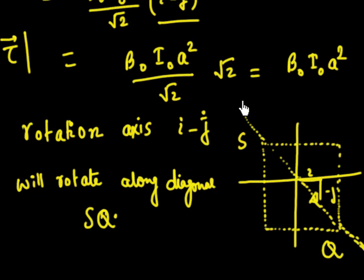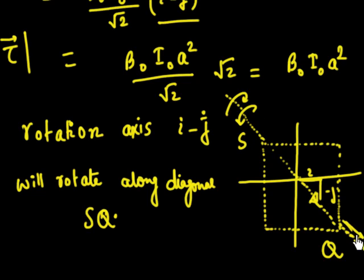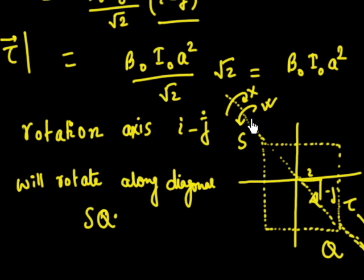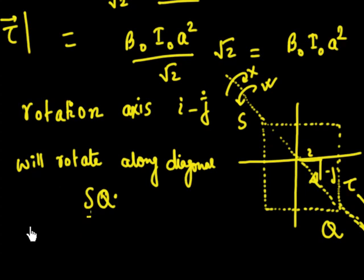To determine the direction of rotation: the torque is directed along i − j (downward along SQ). For the angular velocity ω to align with the torque direction, the loop must rotate anticlockwise when viewed from that axis. The other sense of rotation would give ω directed upward, which is inconsistent. So the loop rotates anticlockwise.